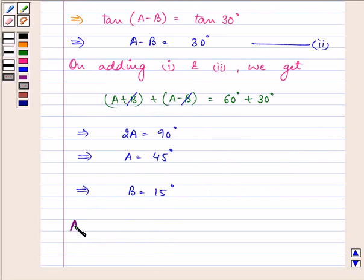So the answer for this question is, the value of angle A is 45° and the value of angle B is equal to 15°.